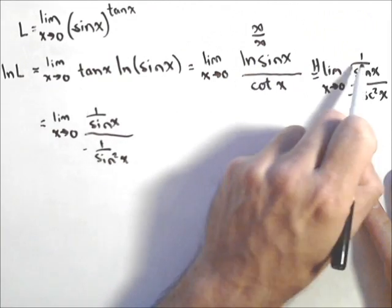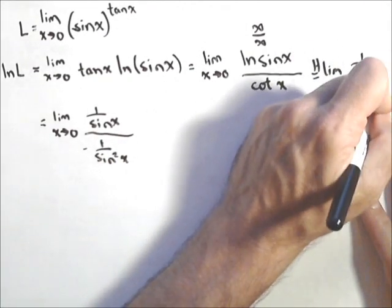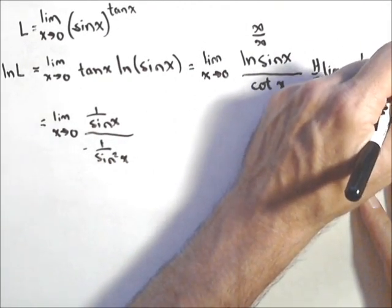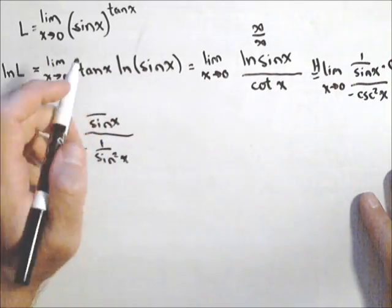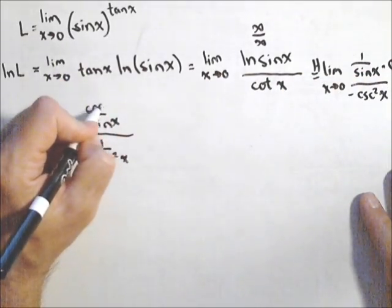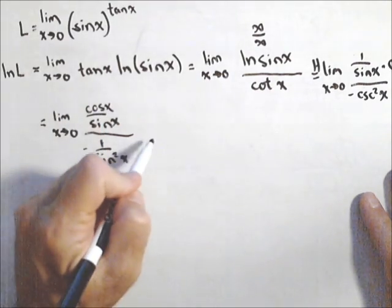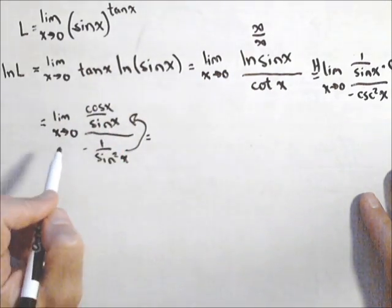Derivative of ln of sine x, it's one over sine x times cosine x. I forgot that, I'm sorry. Cosine x. So we're gonna flip this guy and multiply it.